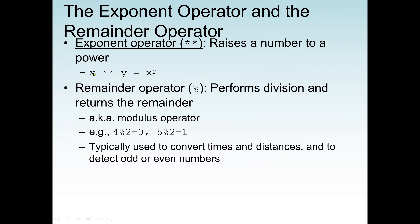Examples: x ** y means x to the power y. For the remainder: 4 % 2 gives 0 because 4 divided by 2 has no remainder. But 5 % 2 gives 1 because 5 divided by 2 has remainder 1.